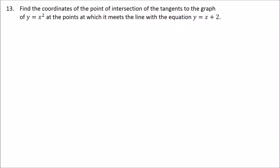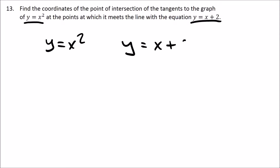We know the points are going to be where this equation meets this equation, so I'm going to take y equals x squared and y equals x plus 2 and set them equal to each other. I'll put x squared over here so we get x squared equals x plus 2.